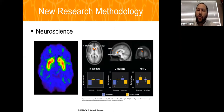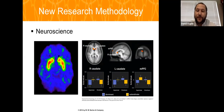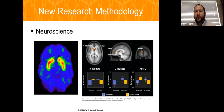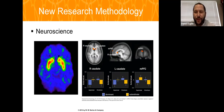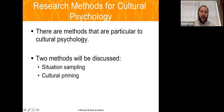Another valuable research approach is neuroscience. Brain responses can shed light on cultural similarities and differences, and they are less subject to social desirability or acquiescence biases. Physiology responds the way it typically does and is less likely to be influenced by personal biases or cultural norms.